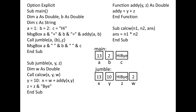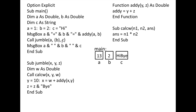Now that Jumble is finished, the variables X, Y, Z, and W in Jumble will all be terminated. Now the last message box will appear and display the values of A, B, and C in main, which are 13, 2, and HiBy.